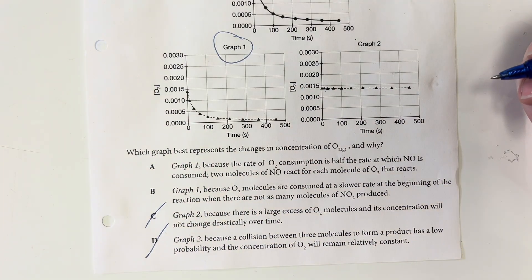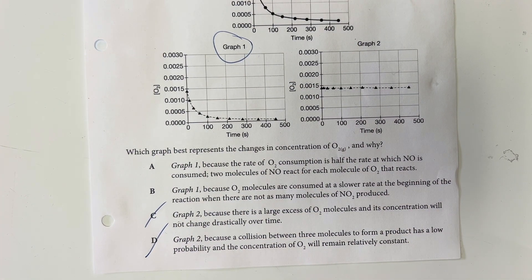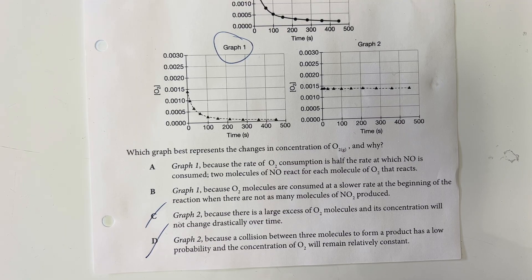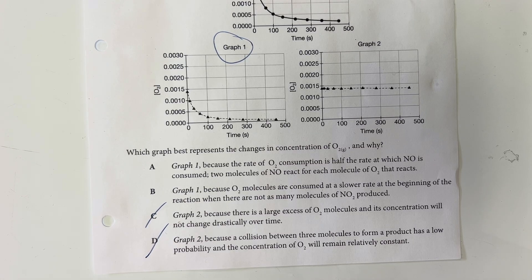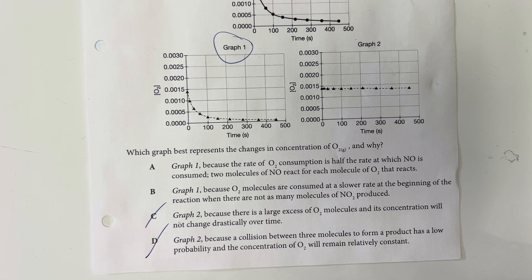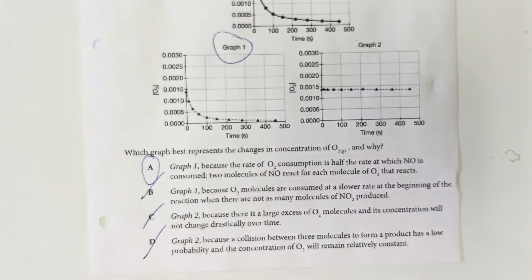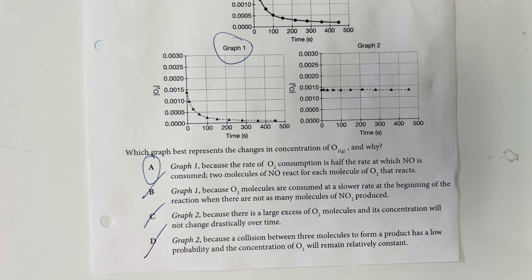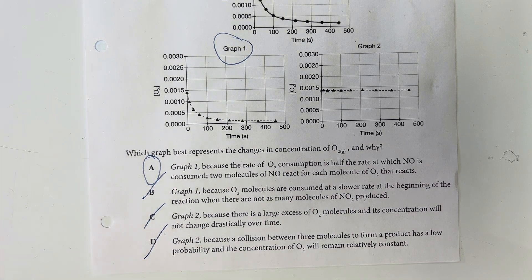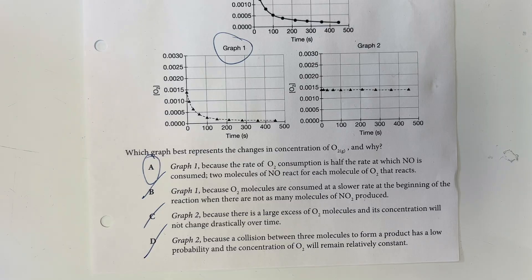I am going to eliminate options C and D. Graph 1 is correct because the rate of oxygen consumption is half the rate of nitrogen monoxide consumption — two molecules of nitrogen monoxide for each oxygen that reacts. The alternative rationale about oxygen being consumed slower because nitrogen dioxide isn't present does not make sense. We are simply utilizing about half as much oxygen as nitrogen monoxide. So option choice A.